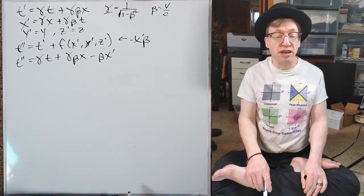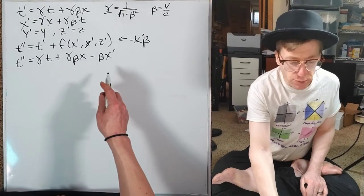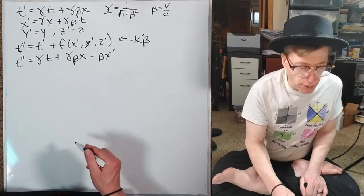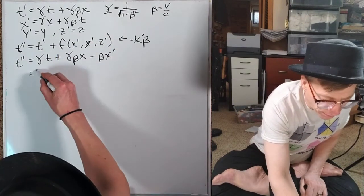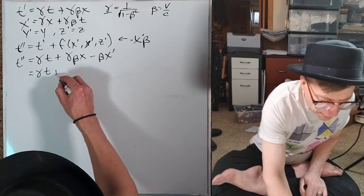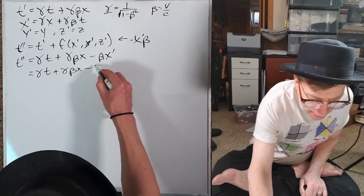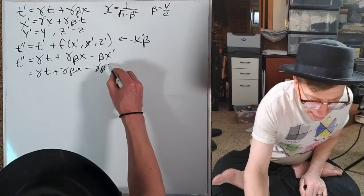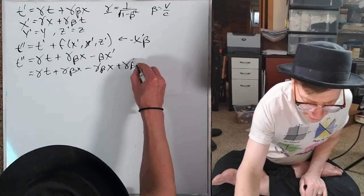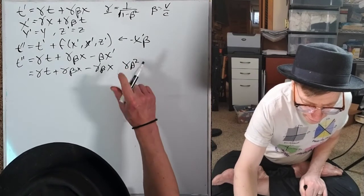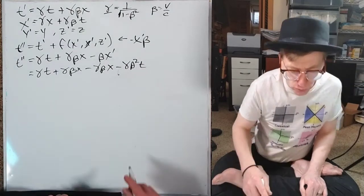Well, we have x' already. That would be this thing. So we just had to expand that out. γt + γβx - γβx + γβ²... - γβ²t.